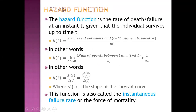The hazard function is the rate of death or failure at an instant t given that the individual survives up to time t. The hazard function equals the probability that the event happens between t and t plus delta t, subject to the event never having happened before t, divided by delta t. In other words, the hazard function equals the derivative of the survival function divided by the survival function. This function is also called the instantaneous failure rate or the force of mortality.